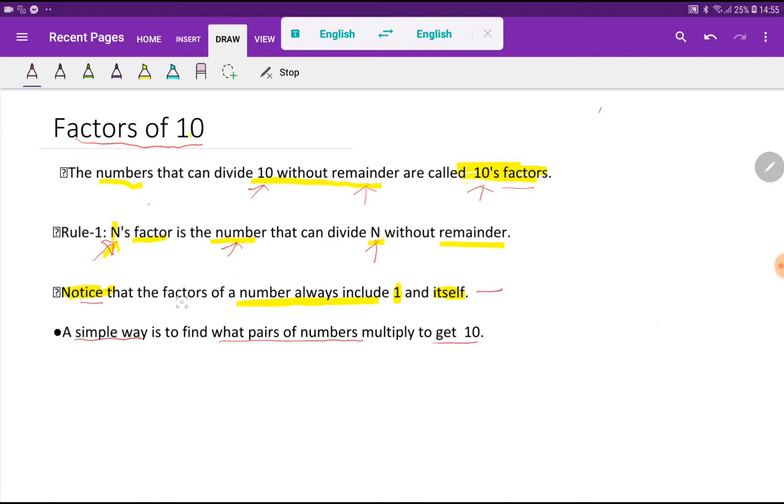Notice here, the factors of a number always include 1 and itself. So the factors of 10 will be 1 and 10.